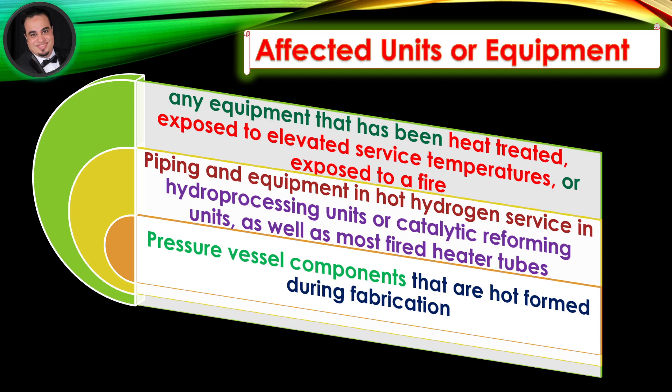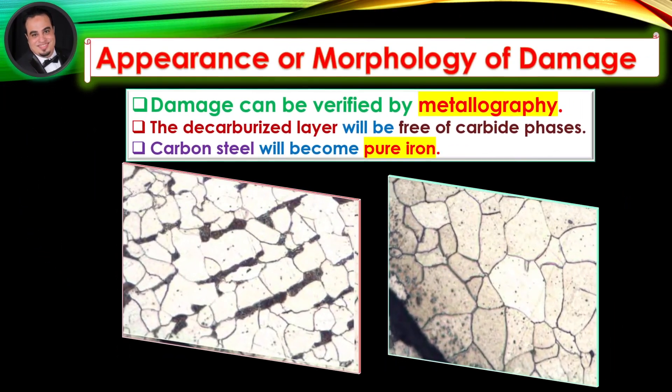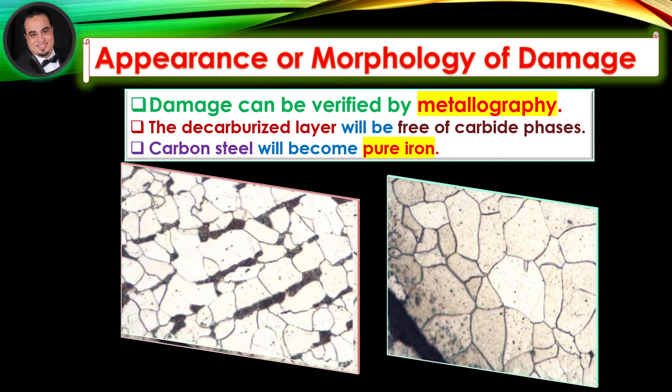Pressure vessel components that are hot formed during fabrication can also be affected. Appearance or morphology of damage: Damage can be verified by metallography. The decarburized layer will be free of carbide phases, and carbon steel will become pure iron.